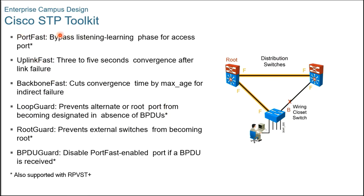For the Cisco STP toolkit: port fast bypasses the listening and learning states for access ports; uplink fast provides 3 to 5 seconds convergence after a link failure; backbone fast provides convergence by maximum age for indirect failures. Some of these are no longer supported, but port fast, loop guard, and root guard are still active. Loop guard prevents an alternate or root port from becoming a designated port in the absence of BPDUs. Root guard prevents external switches from becoming the root. BPDU guard disables a port fast-enabled port if a BPDU is received.